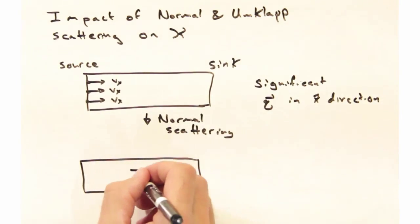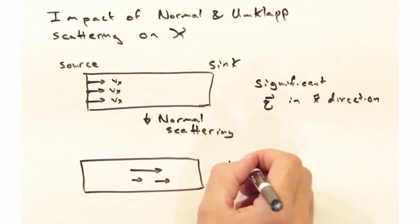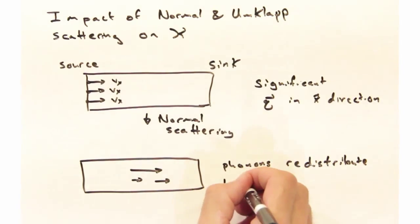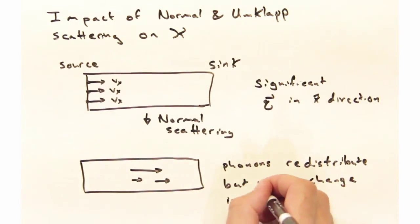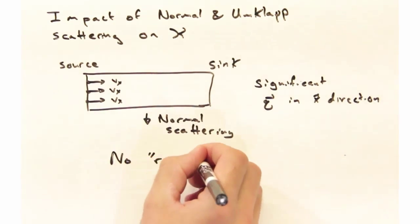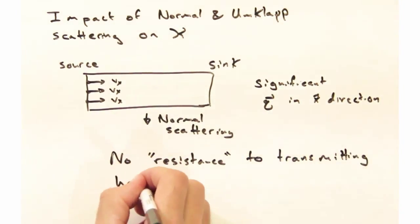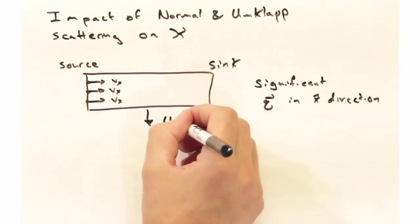This gives us significant phonon momentum in the positive x direction. If we imagine just normal scatterings happening, we may find a redistribution of the phonon momentum, but there's not going to be a net change in this q vector to the right. Therefore, there's effectively no resistance to transmitting heat.